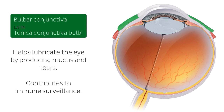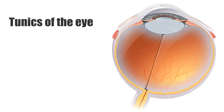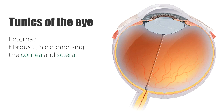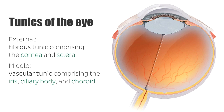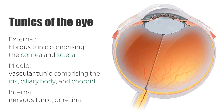Moving past the most external tunic, just below the bulbar conjunctiva we find the fibrous tunic, which comprises the cornea and the sclera — you can see the cornea and also the sclera here. Then there is a middle vascular tunic comprising the iris, the ciliary body, and the choroid — you can see the iris, the ciliary body, and this layer here, the choroid, which will be highlighted on other slides. The most internal tunic is the nervous tunic, also known as the retina, shown here as the yellow layer.